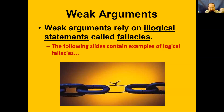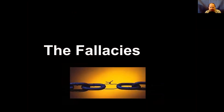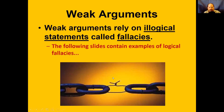Fallacies are related to the idea of a falsehood — something that's false. An argument, just like a coherent paragraph, is a chain of thoughts — a chain of evidence. And if one of your pieces of evidence is weak, obviously that chain isn't going to hold and it's going to pull apart.